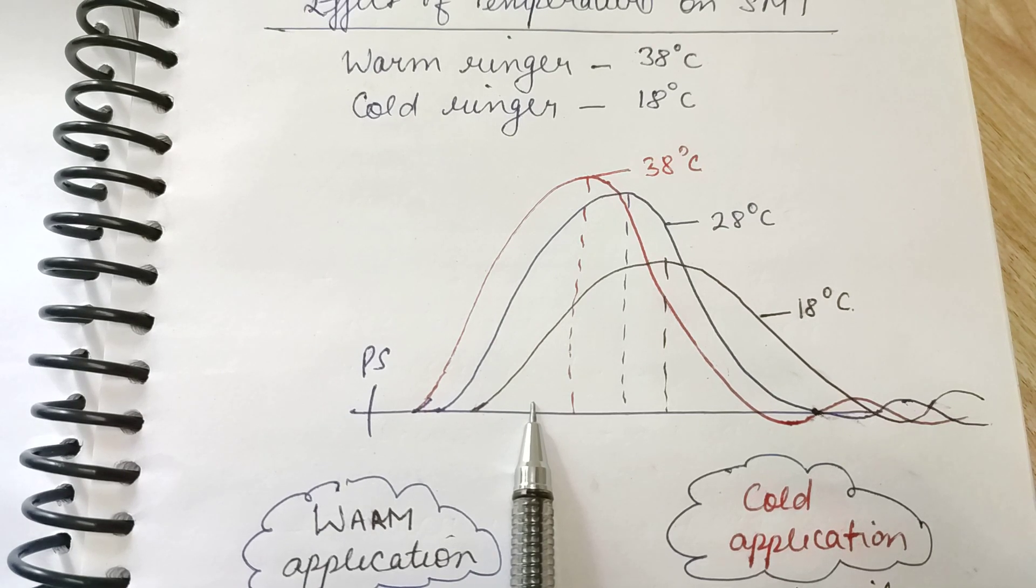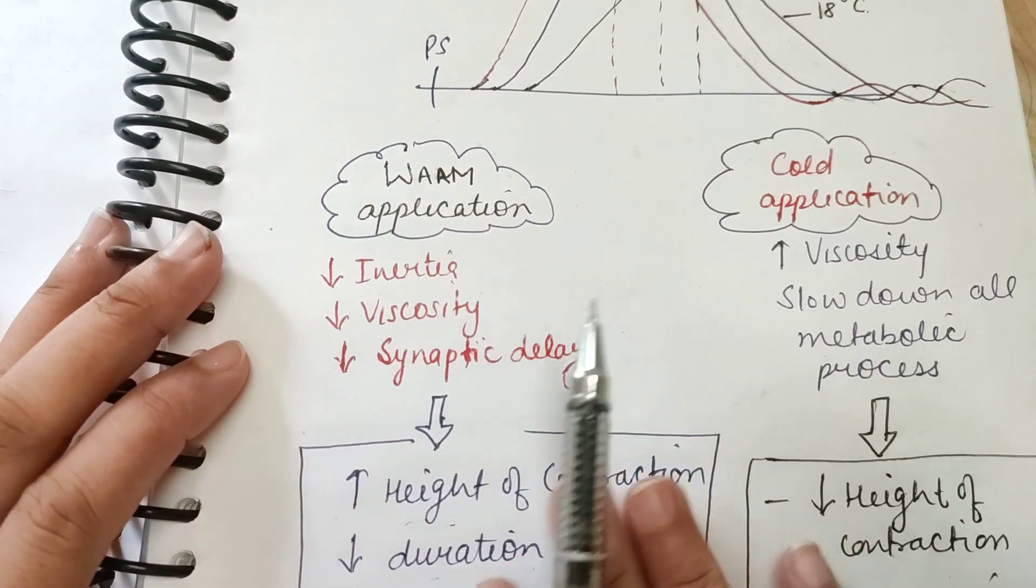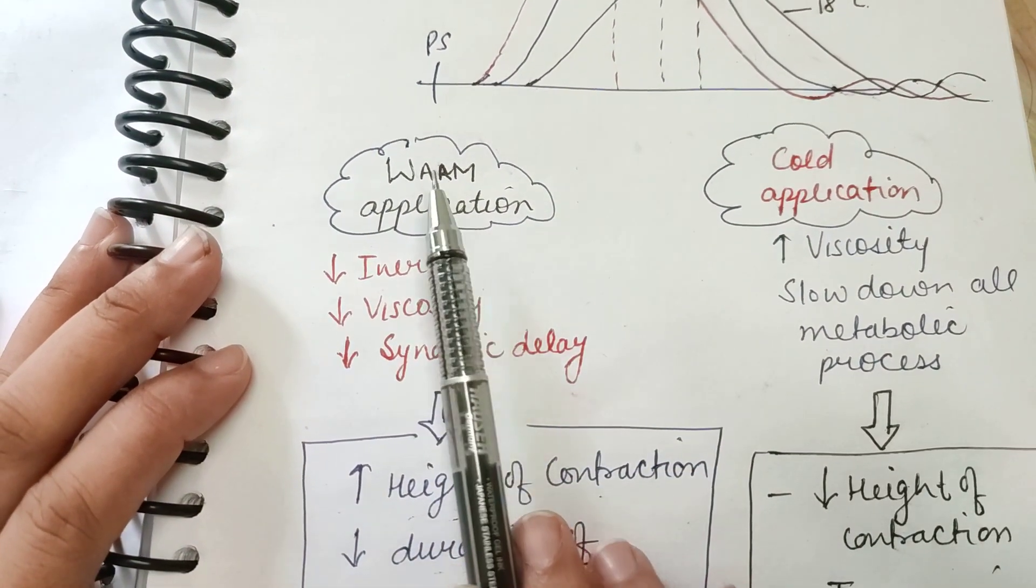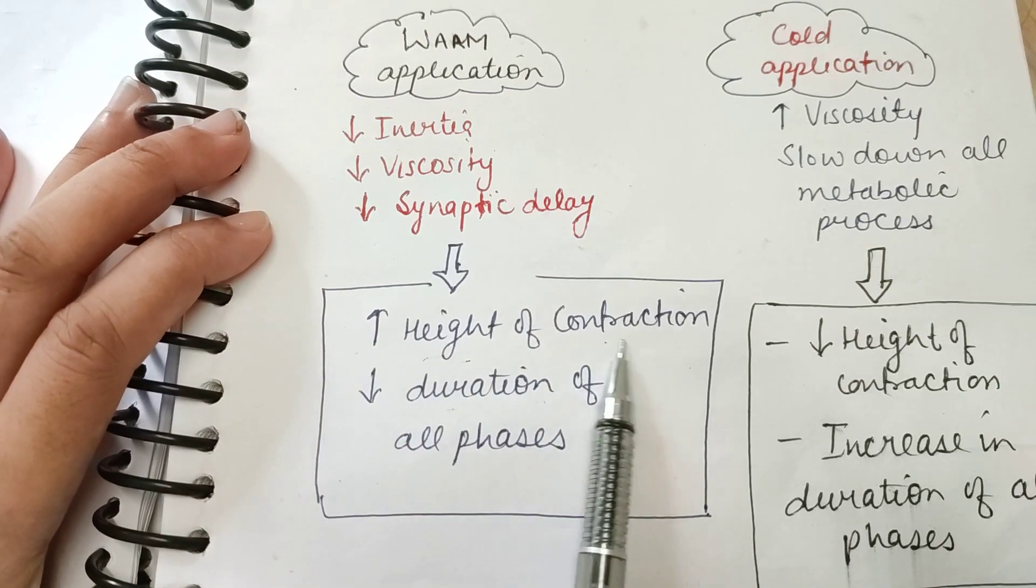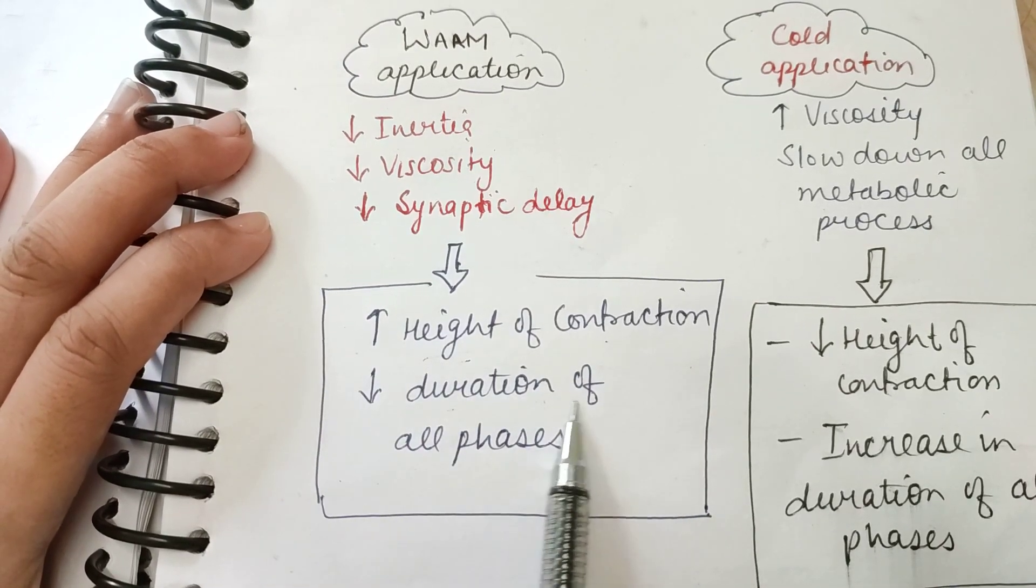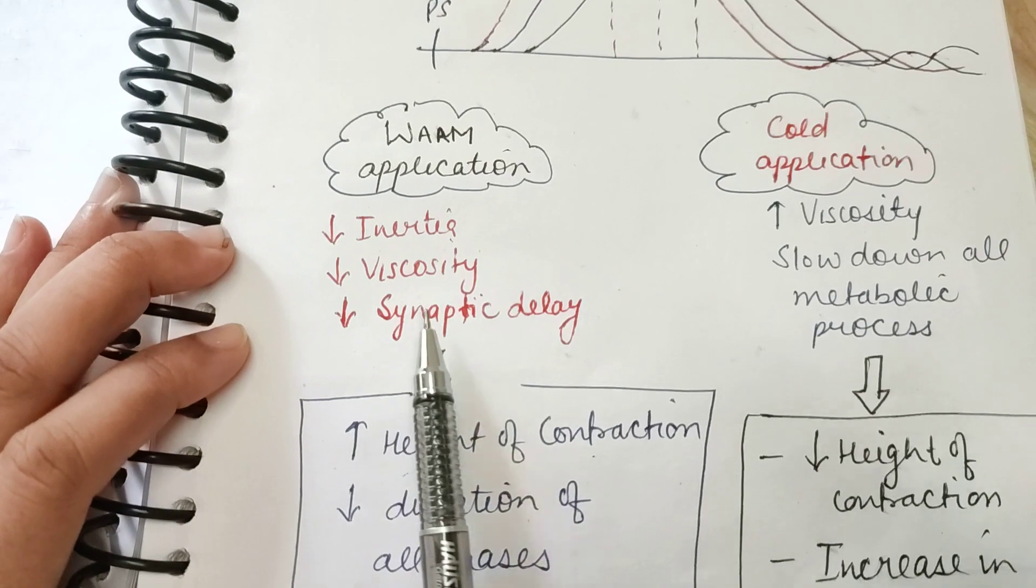This is a very simple graph. On warm application, the observation is increase in height of contraction every time and decrease in duration of all the phases.